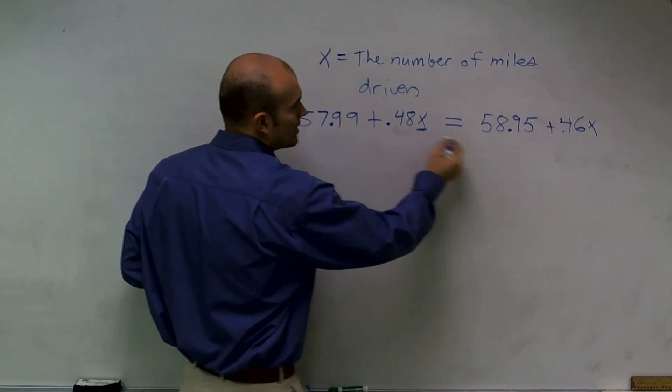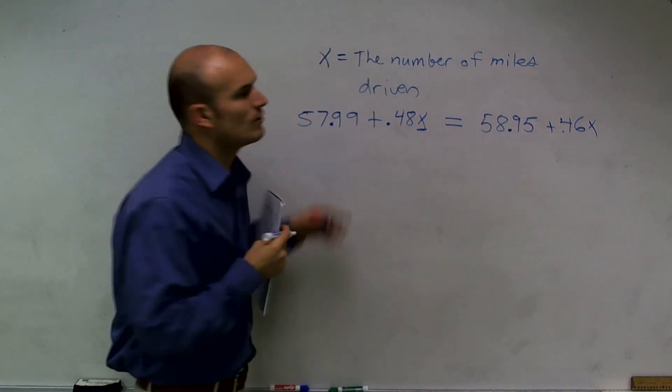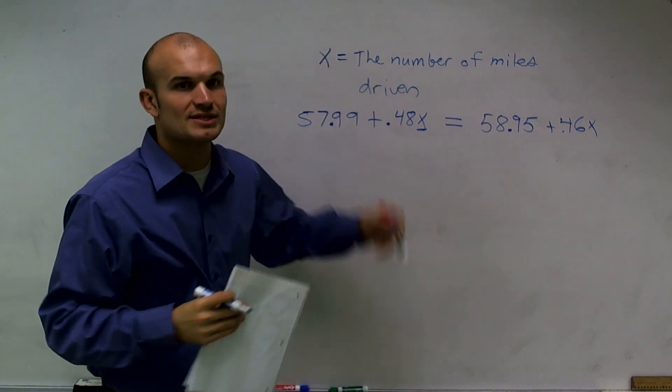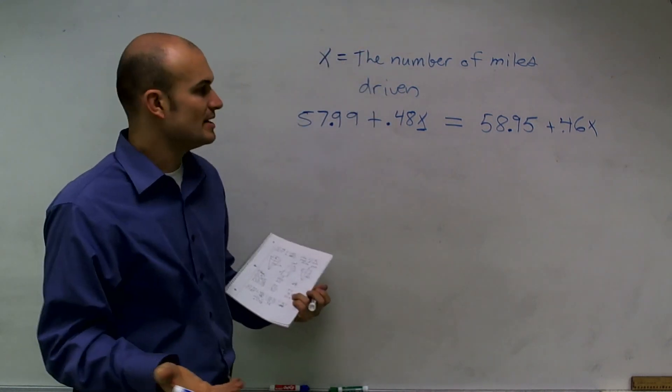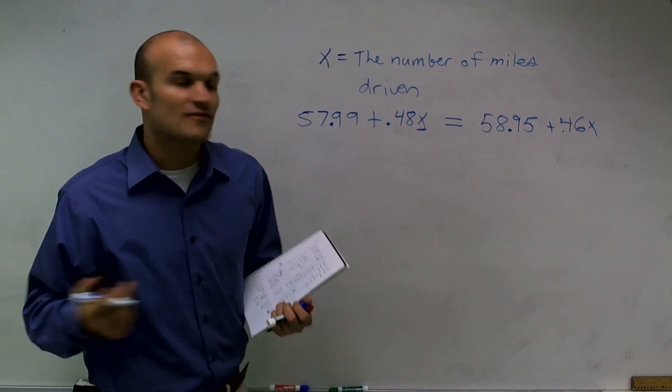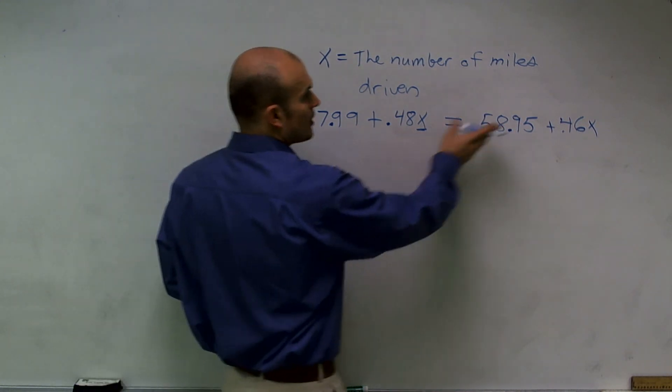And really, what I want to do is, what is the value of X, right? What is the number of miles driven when these two are equal? So to do this from here, I need to solve for X. Therefore, I need to get my X variable on the same side.